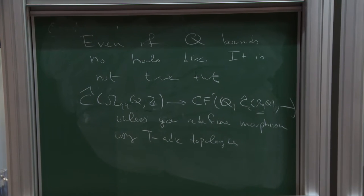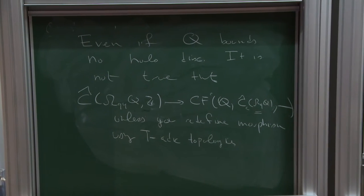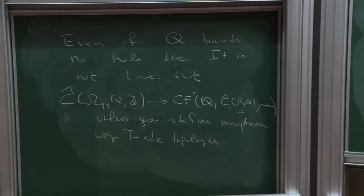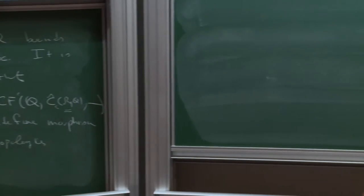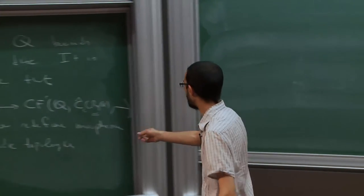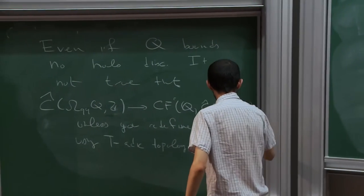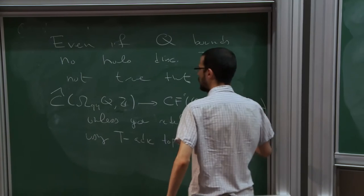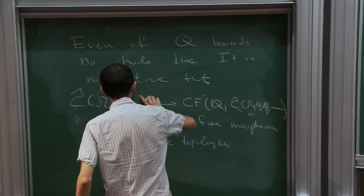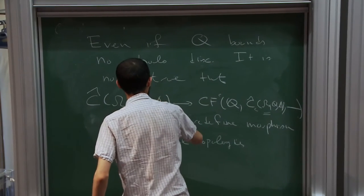Now that I've paid my debts — there is a lambda here, and there would have been a lambda there. The chain has coefficients in lambda. And here there's not a Z, there's a lambda.